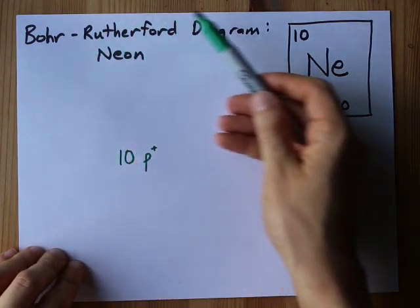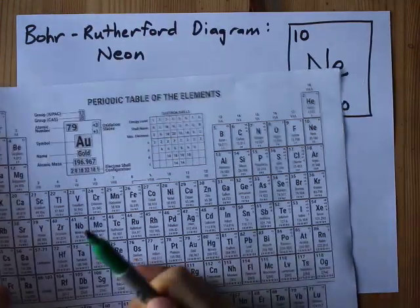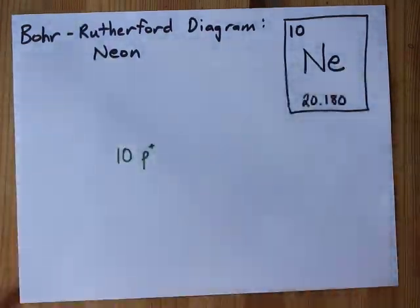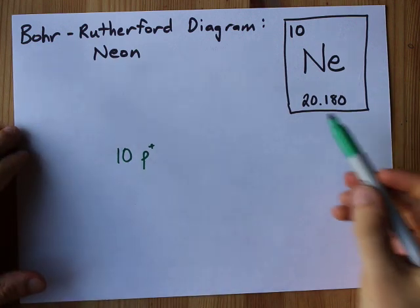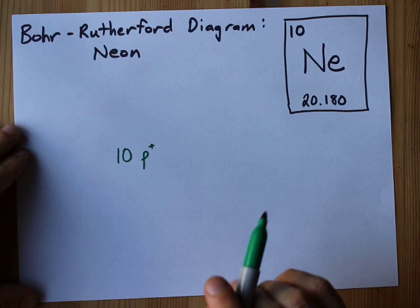Let's draw the Bohr-Rutherford diagram for neon. On the periodic table, neon has atomic number 10 and an average atomic mass of 20.18. We're going to say the mass number is about 20 because we want a whole number.